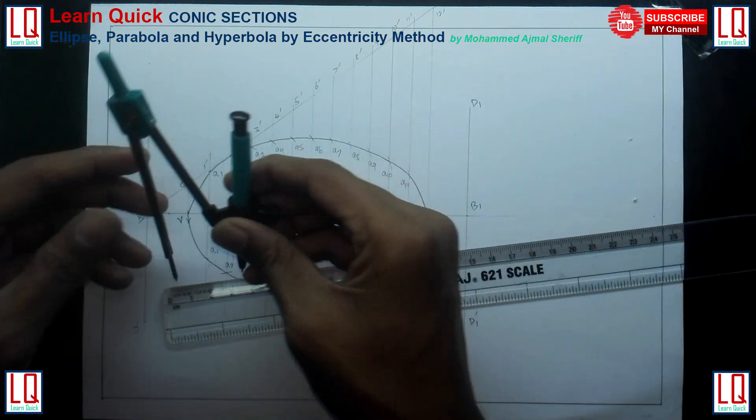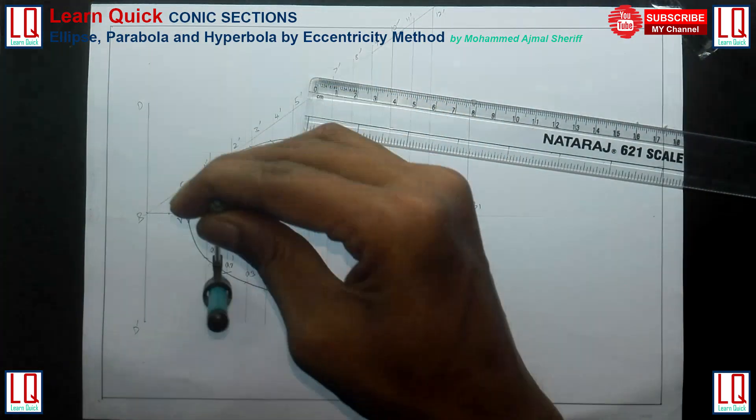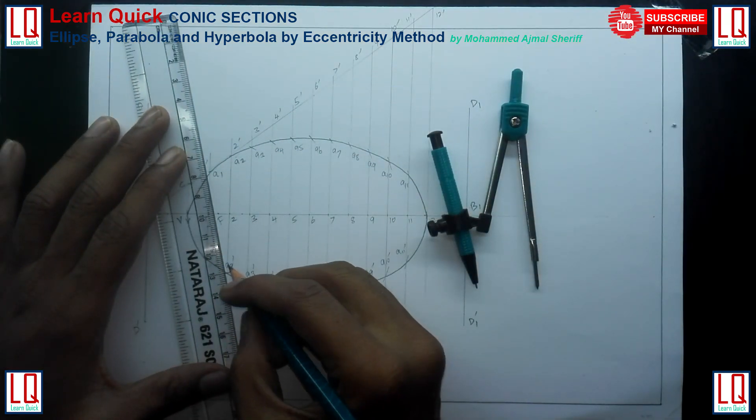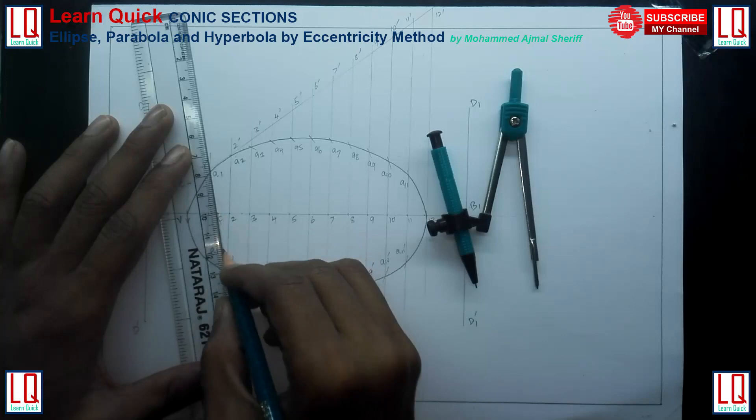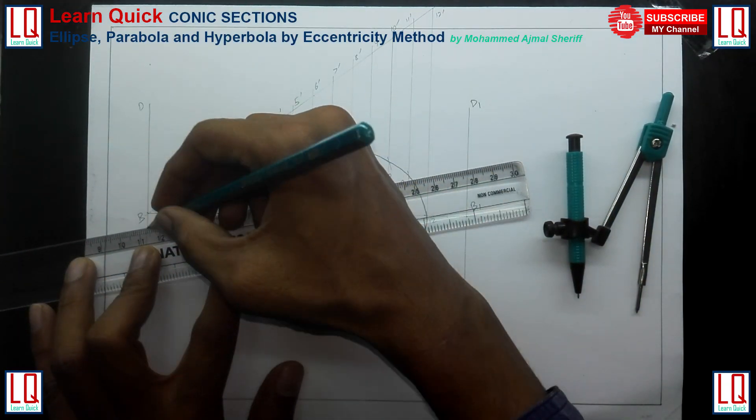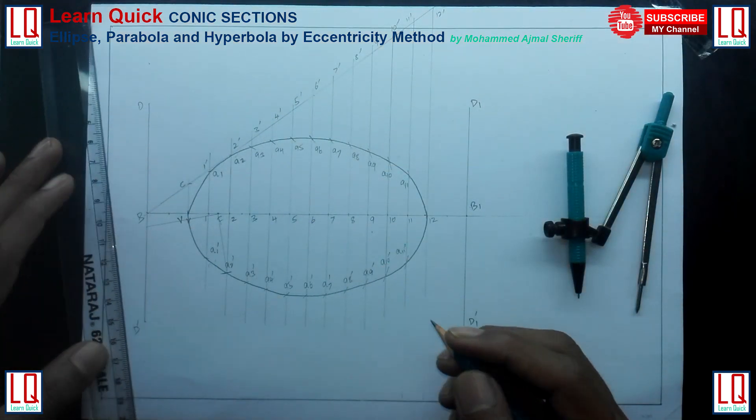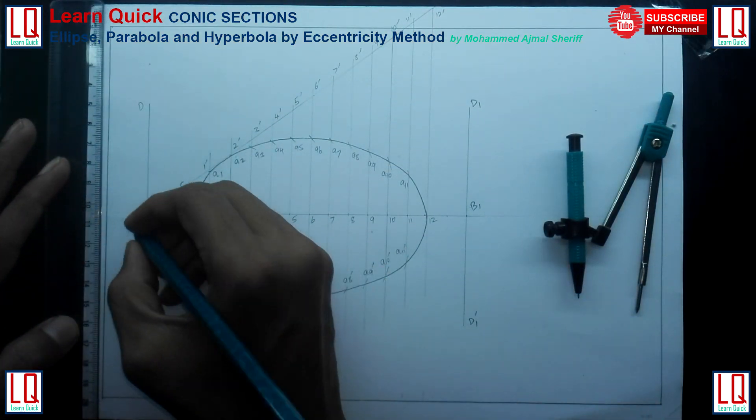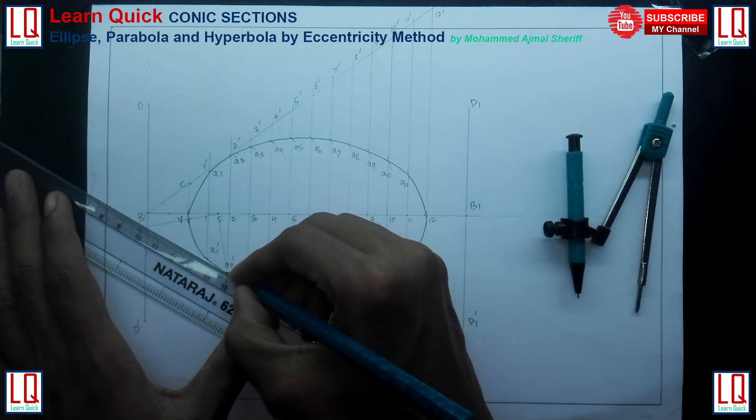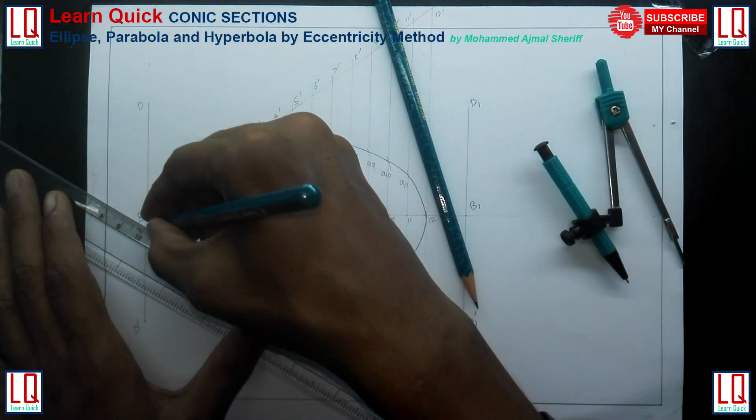To draw a tangent and normal, using compass, cut an arc at elliptical curve from focus for a distance of 30 mm. Draw a line joining the point with the focus and draw a perpendicular line to it meeting the directrix at point E. Join the point and point E which is tangent.